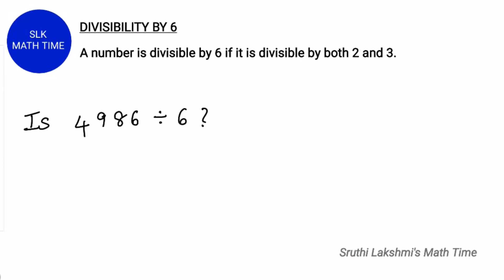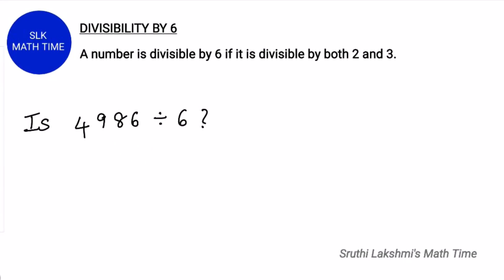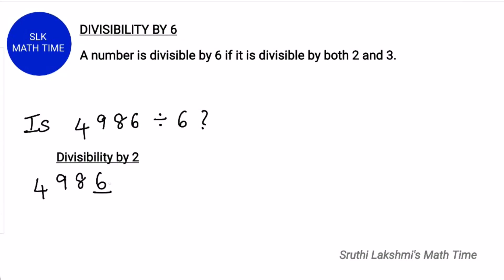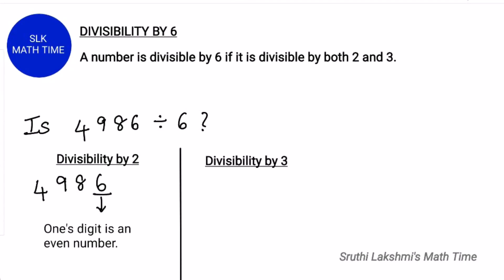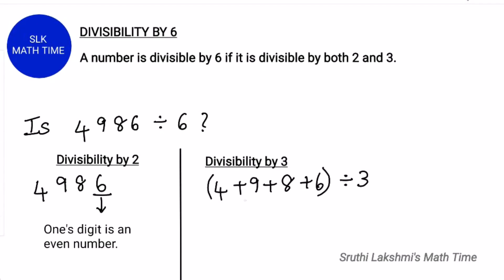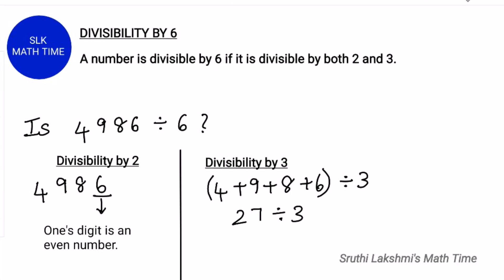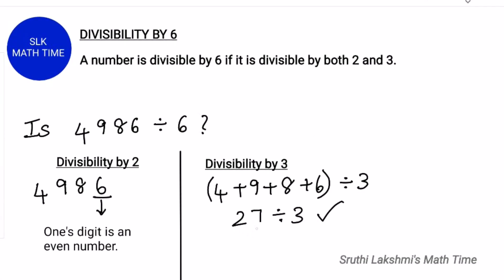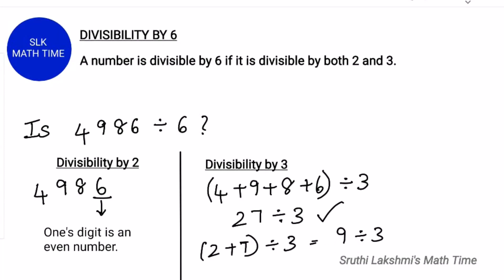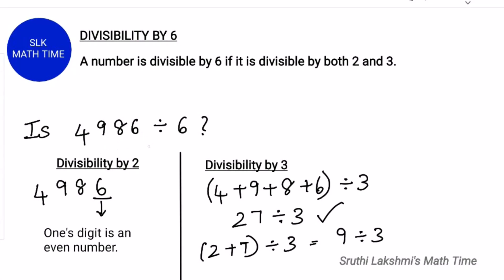So let's see an example. Is 4986 divisible by 6? First, let's see if 4986 is divisible by 2. The ones digit here is 6, and 6 is even, so 4986 is divisible by 2. Now let's see if it's divisible by 3. So let's add the digits: 4 plus 9 plus 8 plus 6. When we add this all together, we get 27, and 27 is divisible by 3. We could also add the digits of 27: so 2 plus 7 is 9, and 9 is also divisible by 3. So 4986 is divisible by 6.